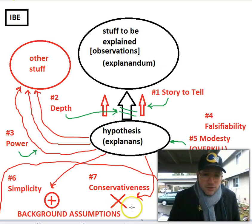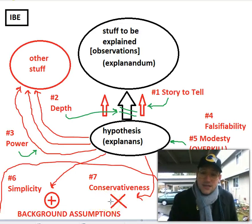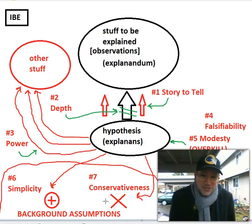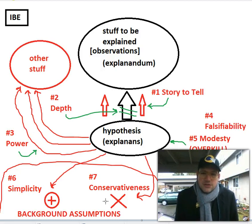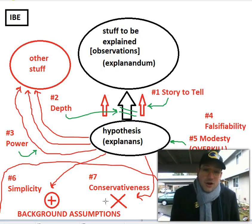Ultimately, Copernicus's explanation is rational because when it comes to all the other standards — depth, power, modesty — it's doing way better than the traditional explanation. But it's still a ding that it contradicts previous background assumptions. That's why we call it conservativeness: we don't want to have to change our background assumptions unless there's really good cause. It adds extra burden of proof for accepting the hypothesis if it's not going to be conservative.